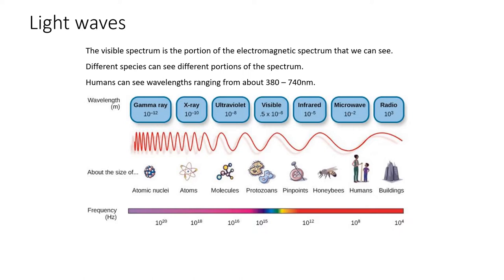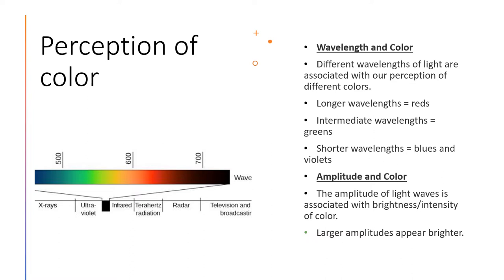Now let's take a look at the overall process of vision. How do we experience color? Different wavelengths of light are associated with our perception of different colors. Longer wavelengths, higher numbers, are associated with reds. Intermediate wavelengths are associated with greens, and shorter wavelengths are associated with blues and violets. The amplitude of light waves is associated with how bright or intense the color is — larger amplitudes appear brighter.